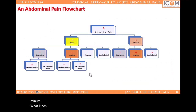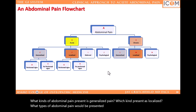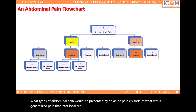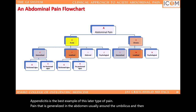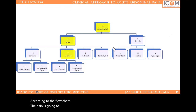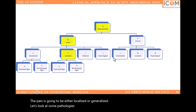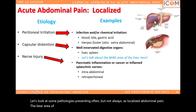What kinds of abdominal pain present as generalized pain? Which kind present as localized? What types would be presented by an acute pain episode of what was a generalized pain that later localizes? Appendicitis is the best example of this later type of pain — pain that is generalized in the abdomen, usually around the umbilicus, and then later localizes to the right lower quadrant. According to the flow chart, pain is going to be either localized or generalized.